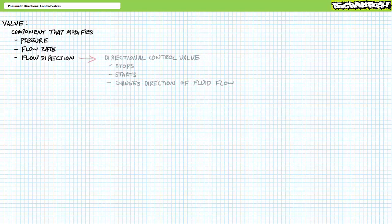A valve is a fluid power component designed to modify pressure, flow rate, or flow direction. A subset of these valves, those that modify flow direction, are appropriately called directional control valves. The purpose of a directional control valve is to stop, start, and change direction of flow in a fluid power circuit. Flow direction ultimately influences the actuation direction of a fluid power actuator. Directional control valve position influences whether pneumatic cylinders extend, retract, or stay put, as well as the rotational direction of pneumatic motors.